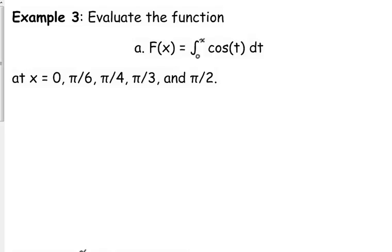So what they want us to do is they want us to evaluate the function defined as the integral from zero to x of cosine of t dt, and they give us five specific values for x. So, big F of zero would be what? Do we even have to do any calculations?